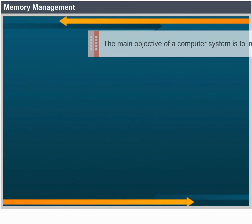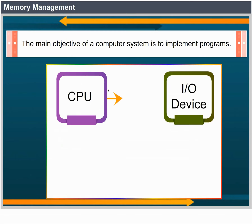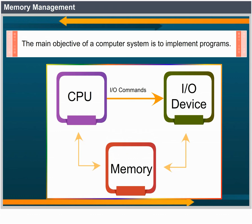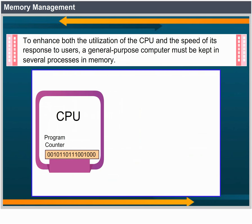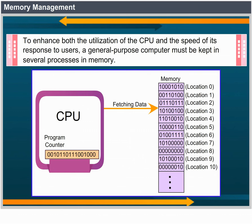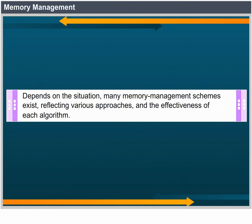Memory Management. The main purpose of a computer system is to execute programs. These programs, together with the data they access, must be at least partially in main memory during execution. To improve both the utilization of the CPU and the speed of its response to users, a general-purpose computer must keep several processes in memory. Many memory management schemes exist, reflecting various approaches, and the effectiveness of each algorithm depends on the situation.